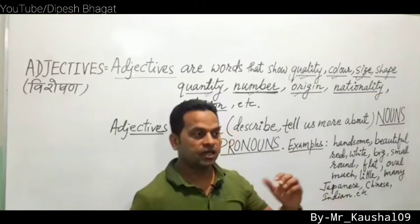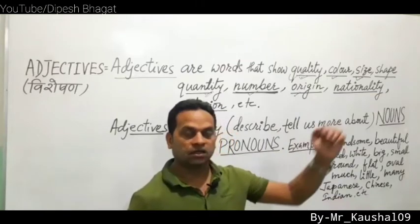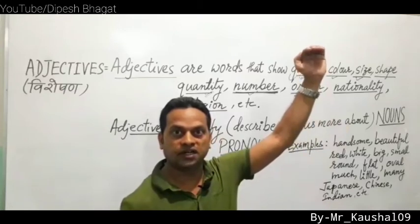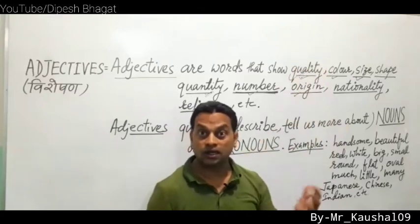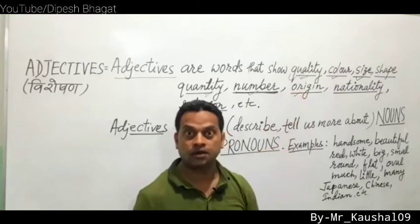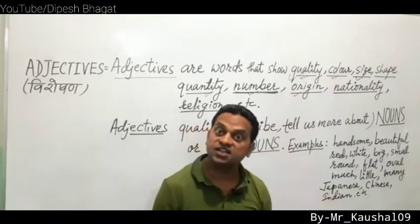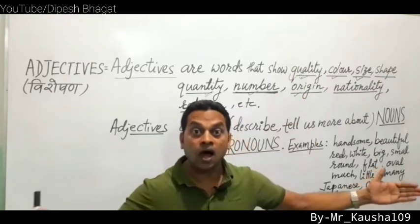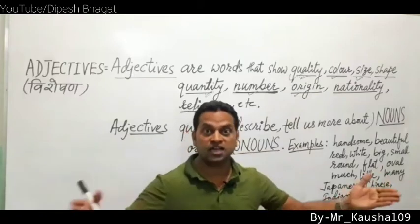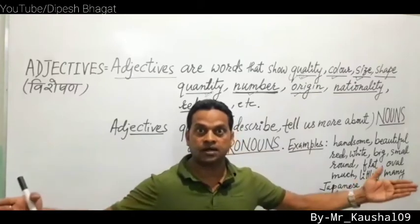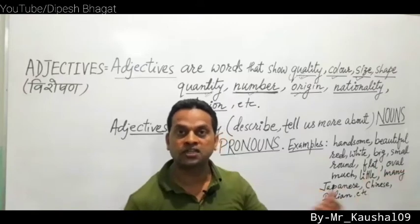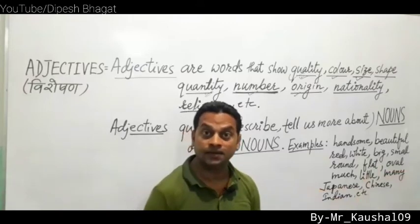Size adjectives: 'The tree is very tall' — tall shows length/size, so it is an adjective. 'The road is wide' — wide shows width/size, so wide is an adjective. 'The river is very big' — big is an adjective. Words showing size, shape, length, breadth, and width are adjectives.